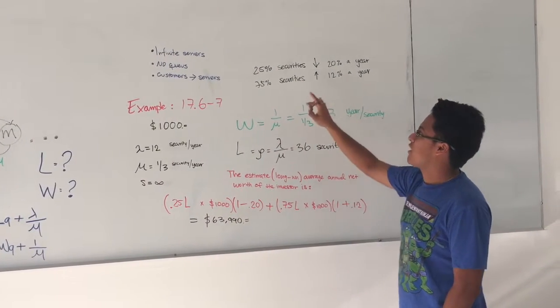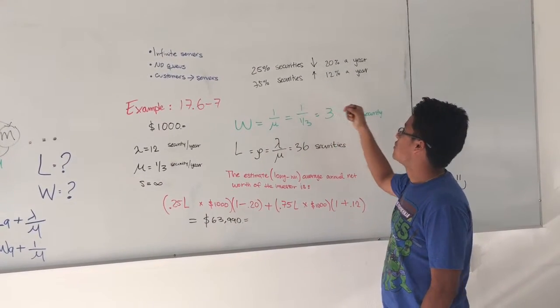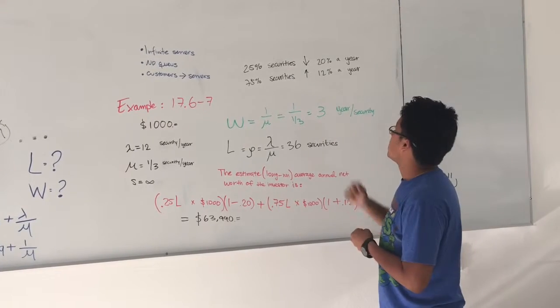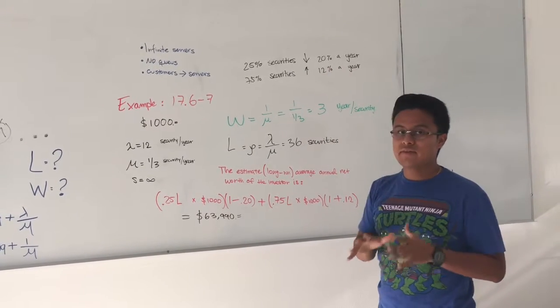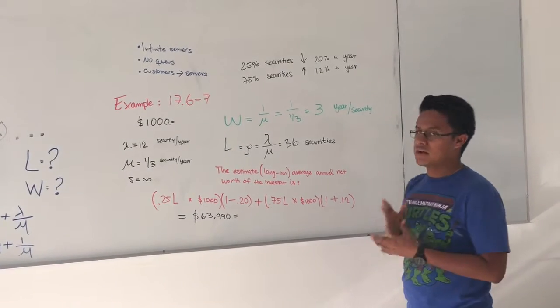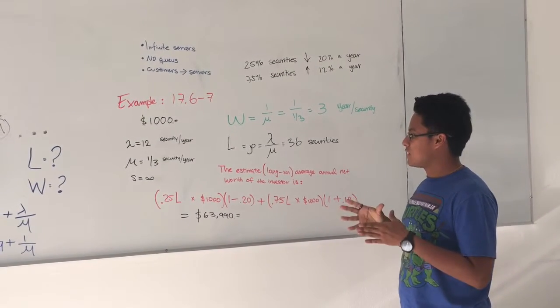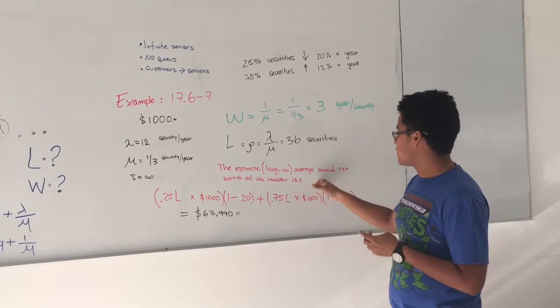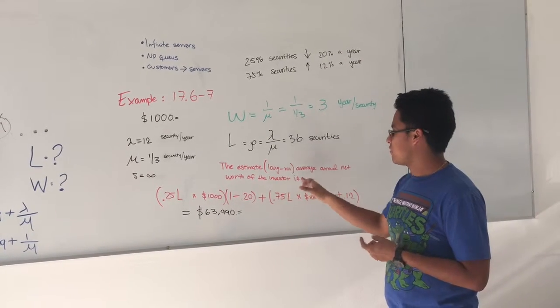And also we know that 25% of the security is going to decrease its value per year, 20%, and the 75% of the left security stocks are going to increase 12% a year. So the problem is going to ask us the estimate average annual net worth of the investor.